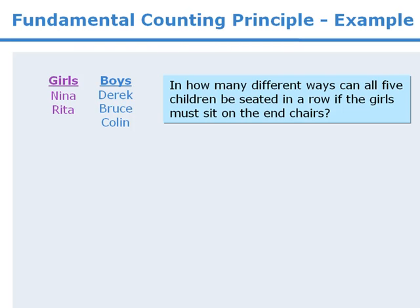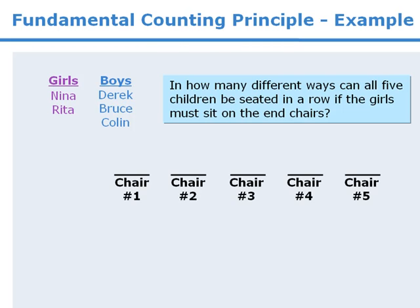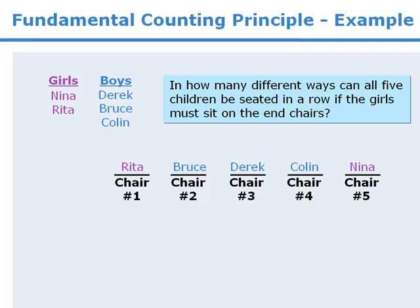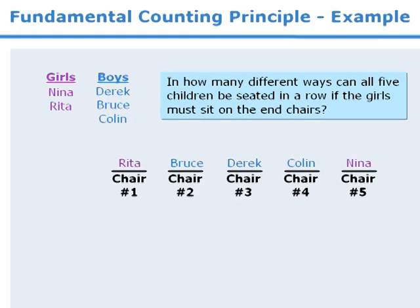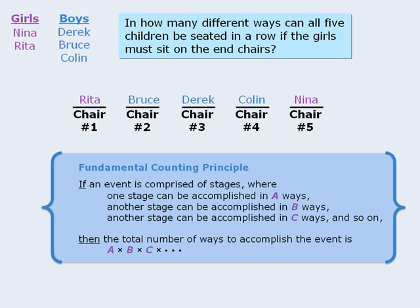To begin, let's sketch our five chairs here, and we'll start listing some possible outcomes. Here's one possible outcome. Notice that the girls are seated on the two outside chairs. Here's another possible outcome, and here's another. As we are listing possible outcomes, we should be trying to determine whether or not we can apply the fundamental counting principle to this question.